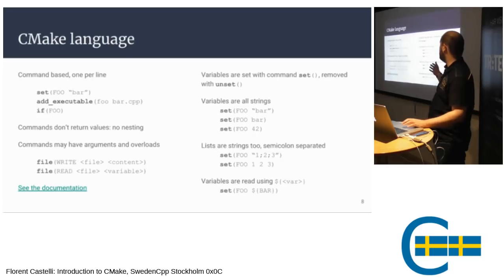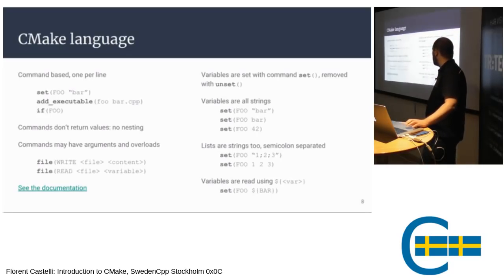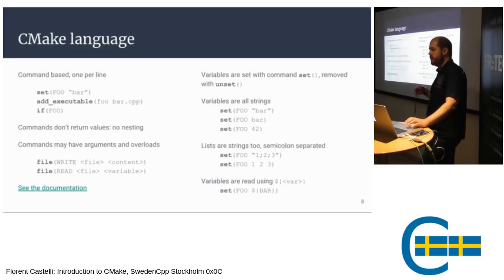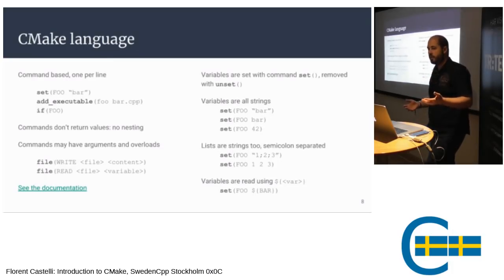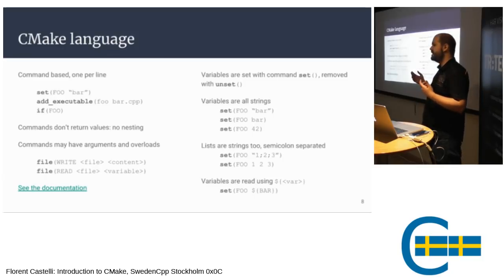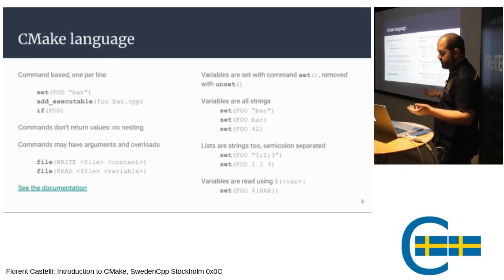Commands can have many arguments and sometimes overloads. For example, the `file` command has multiple profiles — one allows writing data to a file, another with `read` reads from a file. If you look at the CMake documentation for a command, it lists all variants, sometimes shows examples, and describes all parameters. The commands usually have intuitive names, so have a look in the documentation.